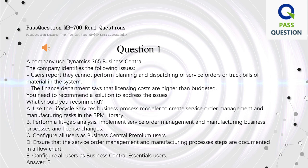Question 1: A company uses Dynamics 365 Business Central. The company identifies the following issues: users report they cannot perform planning and dispatching of service orders or track bills of material in the system. The finance department says that licensing costs are higher than budgeted. You need to recommend a solution to address the issues. What should you recommend?